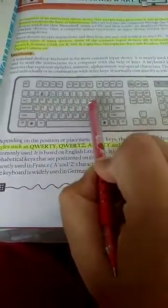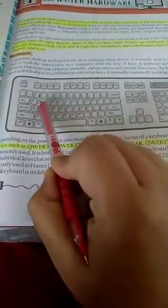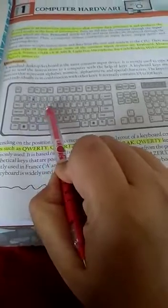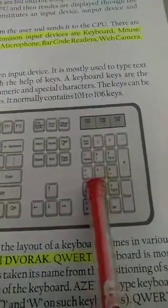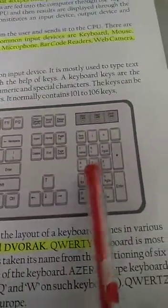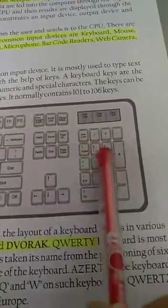Now, here the keys you see are alphabetic because they contain alphabets which are printed on them. Here you will find that the keys have numbers on them, so they are called numeric keys.